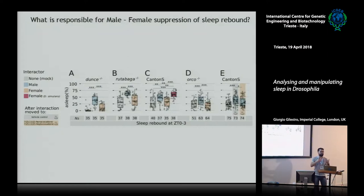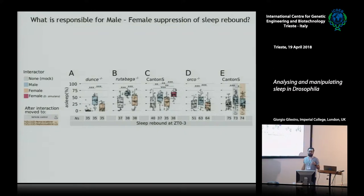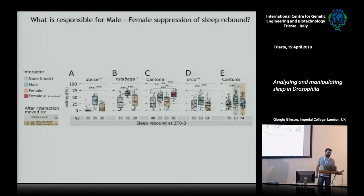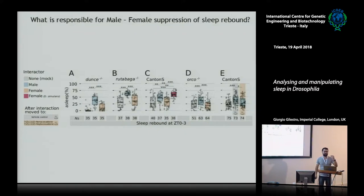We asked whether this is an olfactory cue by testing Orco mutants. Orco is a co-receptor for all olfactory receptors in the fly, also known as OR83b — a very important gene conserved across evolution, crucial also for studying mosquito and malaria spreading. We know that Orco flies are completely anosmic — they cannot smell anything. Yet the phenotype we see in Orco flies is the same as in wild-type flies. So the cue we're looking for is not an olfactory cue.